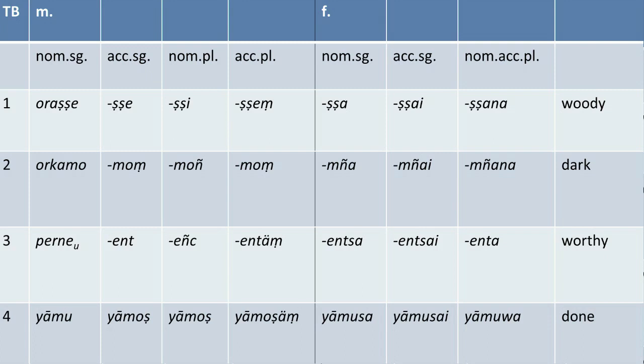Okay, so the first class here is represented by the -ṣe adjectives. We already saw them in the session on derivational morphology. And here again, we have the word oroṣṣe 'of the country'.